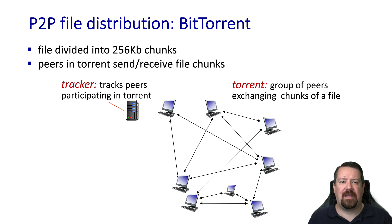There are a couple of key terms to keep in mind with BitTorrent. The torrent is the set of peers that are exchanging a particular file, so a given peer can participate in many different torrents at the same time. There is also a tracker, which is a server maintaining a list of which peers are participating in a particular torrent. From that explanation, we can see that BitTorrent is not a pure peer-to-peer protocol, because it still has an always-on server — i.e., the tracker — and if the tracker goes away, the protocol will no longer work. That being said, there have been enhancements to BitTorrent that allow it to work with a distributed tracker instead of a tracker centralized on one server.